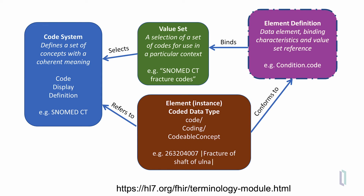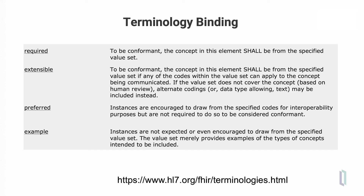This diagram is a representation of how terminology is used in FHIR. On the right in the purple box is an element definition for a particular element within a FHIR resource, and that element is bound to a certain value set. That value set is a selection of codes for use in this particular context for this data element — in this example, a set of SNOMED CT fracture codes. Those come from the code system represented on the left in the blue box, which includes the code, the display text, and the definition of each code. These are represented as an element instance with a coded data type and a specific member of that value set, in this case for fracture of the shaft of the ulna.